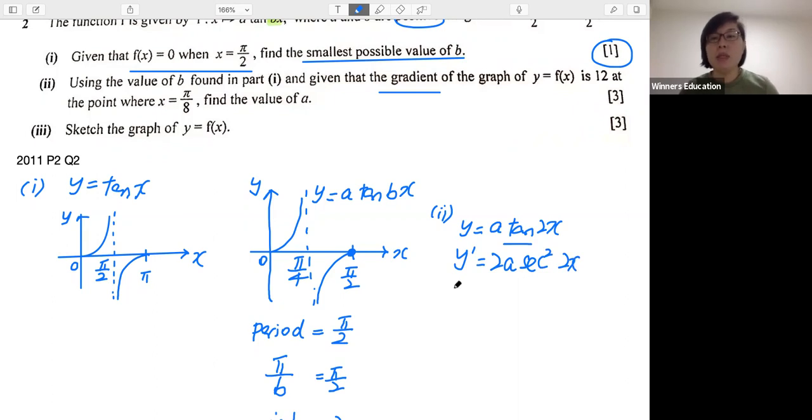Alright, so what the information is telling us is when x is π/8, my gradient, you can also call it dy/dx. In this case, my y prime is equals to 12. This is what the question is saying.